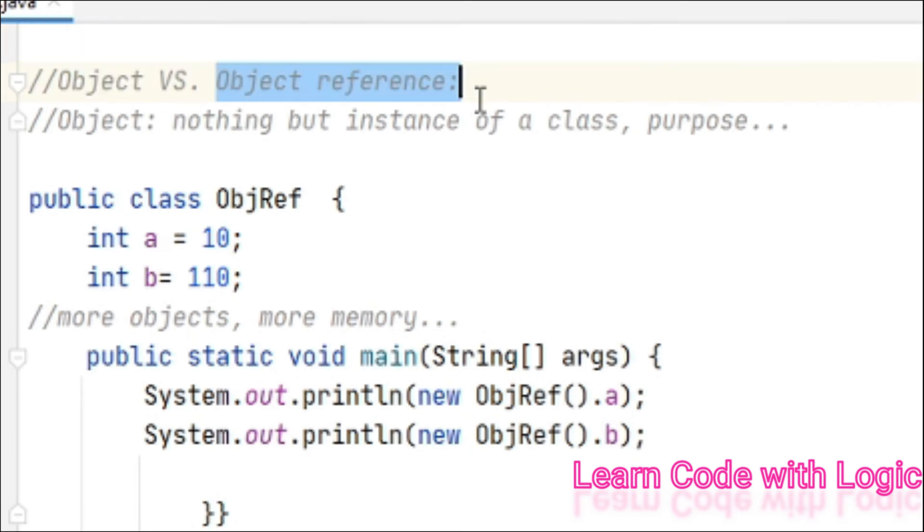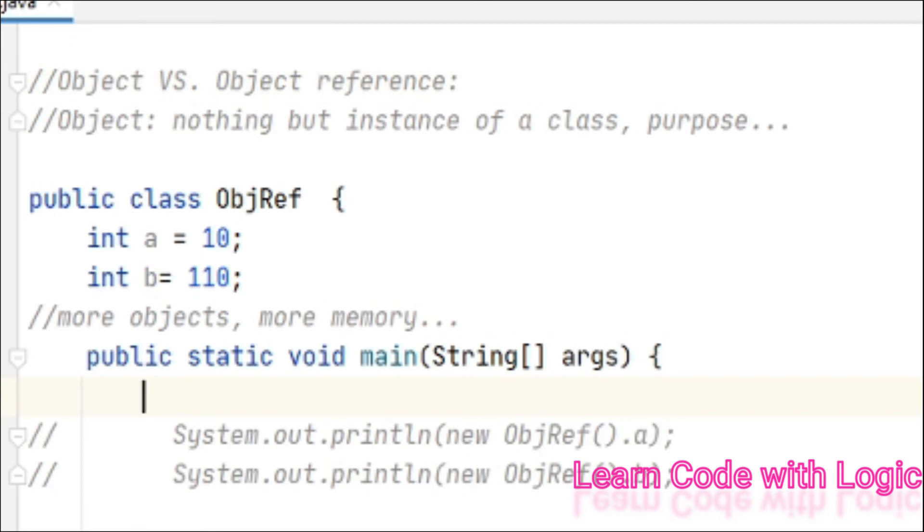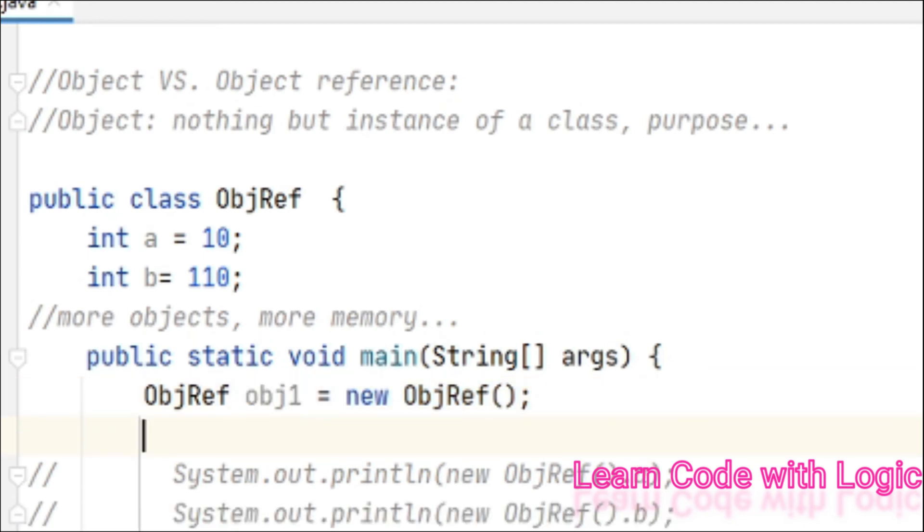That's the reason we create object reference instead of creating objects. Now let's create object reference. This is also pretty similar, this is the syntax. Here we created object and this is the object reference. So using that reference we can call n number of variables and n number of methods.